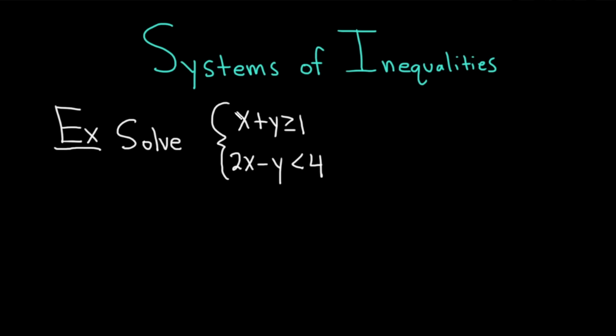The example we have is to solve this system. We have x plus y is greater than or equal to 1, and 2x minus y is less than 4. To solve the system, they basically mean they want us to sketch the solution set.